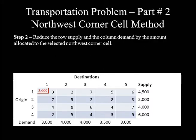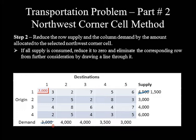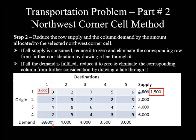Step 2: Reduce row supply and column demand by the amount allocated — 3,000. Supply was 4,500, so 4,500 − 3,000 = 1,500 remains. Demand was 3,000, so 3,000 − 3,000 = 0. Since demand is fulfilled, column 1 is eliminated from further consideration by drawing a line through it. The remaining supply of 1,500 is still available in row 1. We then continue to Step 3.